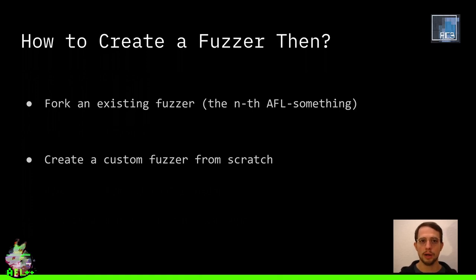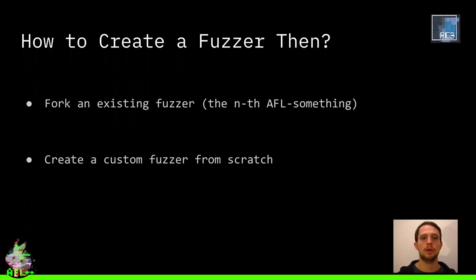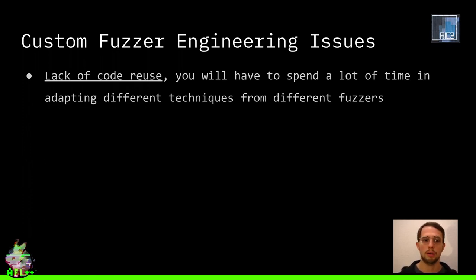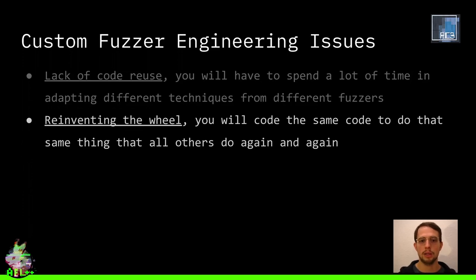Our AFL++ fork actually tries to incorporate many of these, but of course it's impossible to incorporate all of them. The other way is you can create a whole fuzzer from scratch, which of course works, but that way you don't reuse any existing code. You will have to spend a lot of time just doing basic engineering things. You adopt different techniques from different fuzzers, you have to trawl GitHub, you reinvent the wheel, and in the end you will end up with a more naive design.